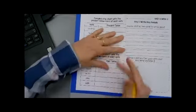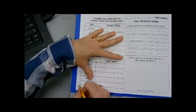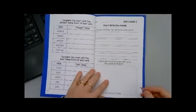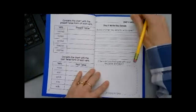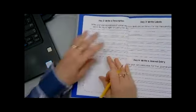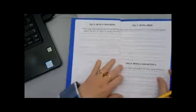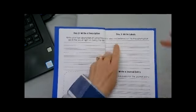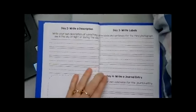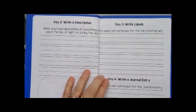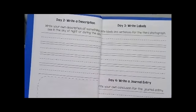Turn over to the next page and write the number four at the bottom. We already completed day one and day two together earlier this week. Now today, day three, is the assignment — you're going to write labels and sentences for the third photograph. Let me show you the photographs and explain what you're going to do.